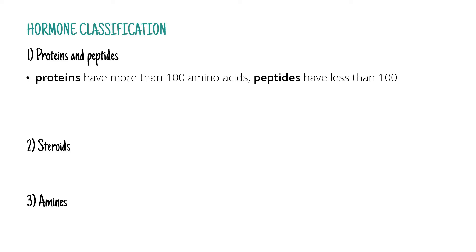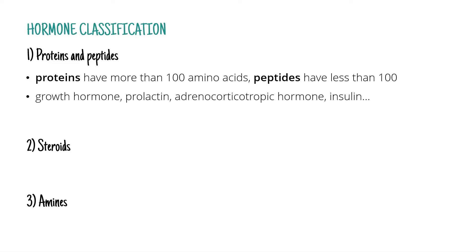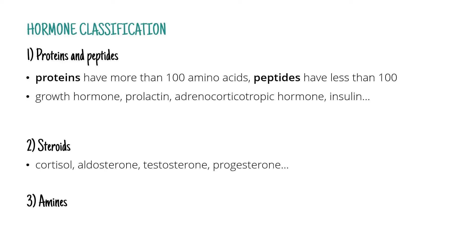Peptide hormones are for example growth hormone, prolactin, adrenocorticotropic hormone, or insulin. Steroid hormones are for example cortisol, aldosterone, testosterone, or progesterone.